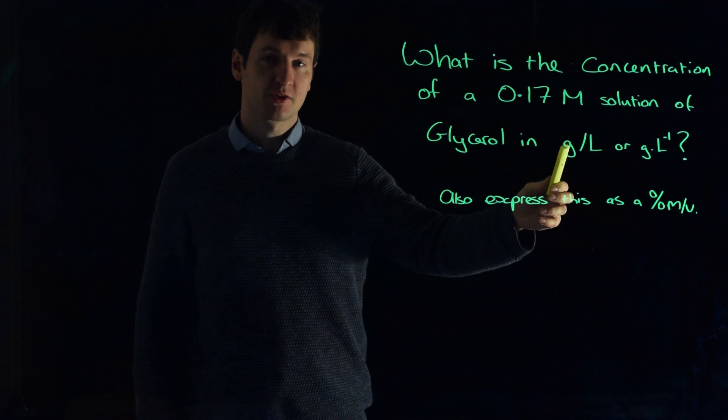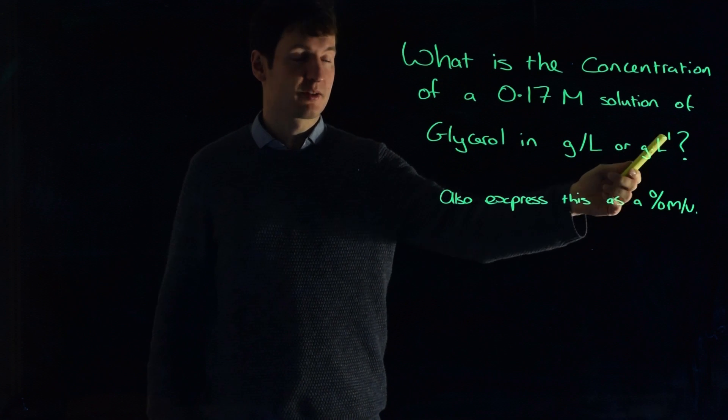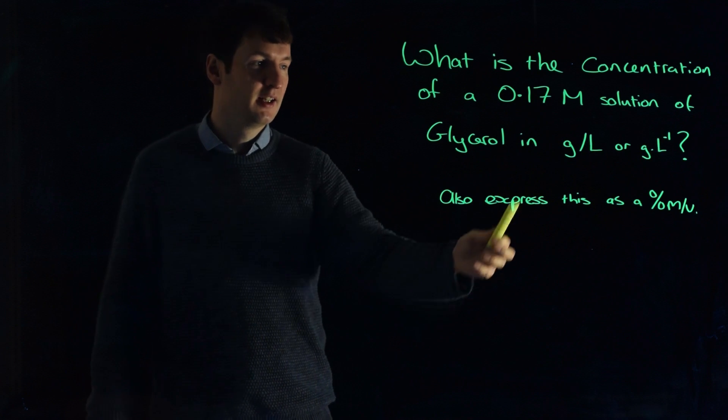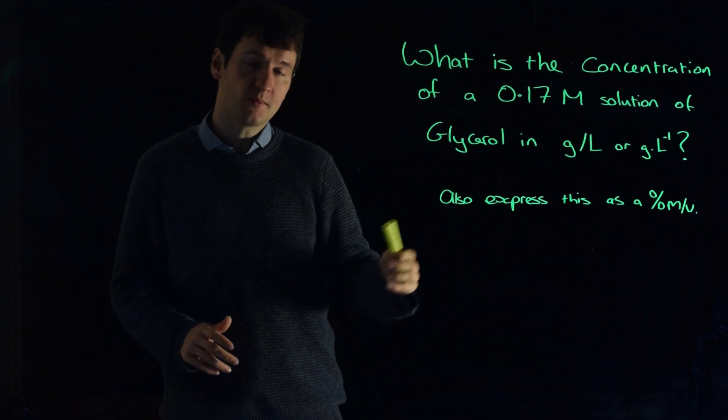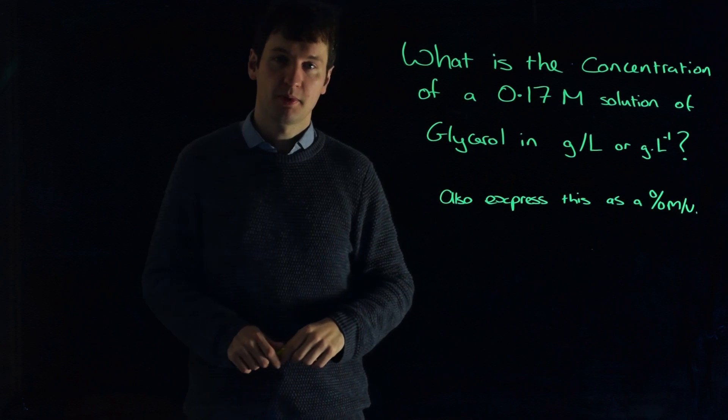You can write grams per liter as grams divided by liters, or grams multiplied by liters to the power of minus one. It's the same thing. And then also express this as a percentage mass per volume.